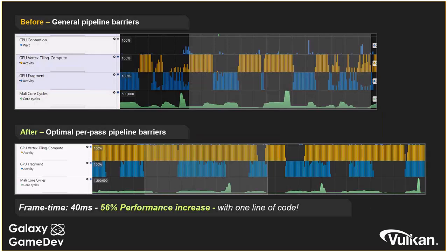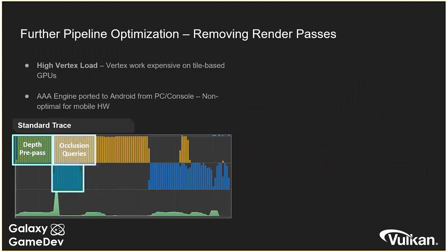We're now at 40 milliseconds frame time, down from 63 — a really nice saving. Another area to look at is stages we don't need. Using Streamline for a detailed breakdown, one common thing when working with a desktop engine is a depth pre-pass. If you've got a very fragment-bound game, a depth pre-pass can eliminate overdraw rendering so you only ever run a shader once per pixel on screen.